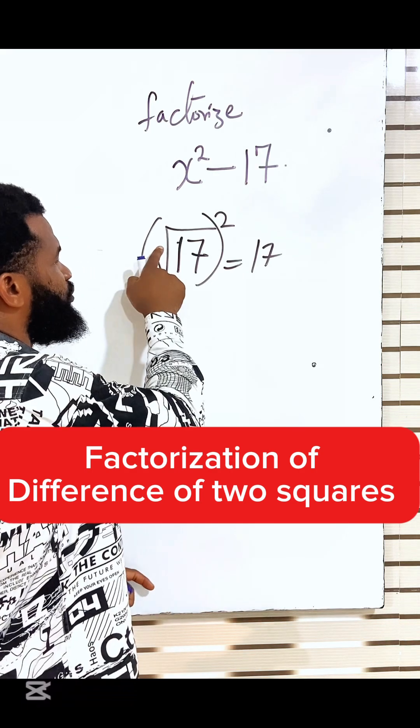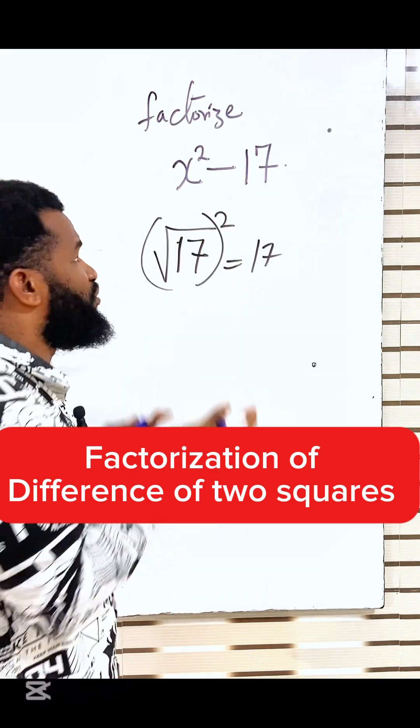I'm sure you get that because root will cancel the power of 2 and 17 comes. So what should I do?